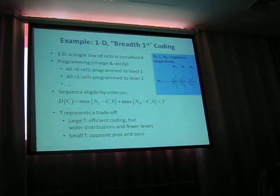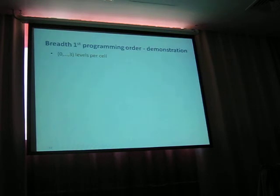We will shortly see an example demonstrating this criterion. We want to restrict, to constrain this criterion with the value T. And T represents a trade-off. Large T is efficient coding but wider distribution, so poor loads. And small T, opposite pros and cons.